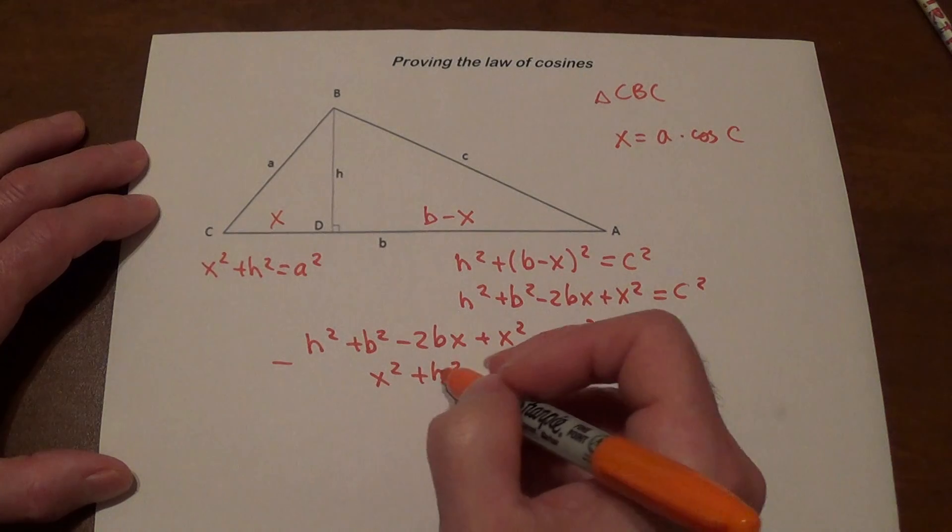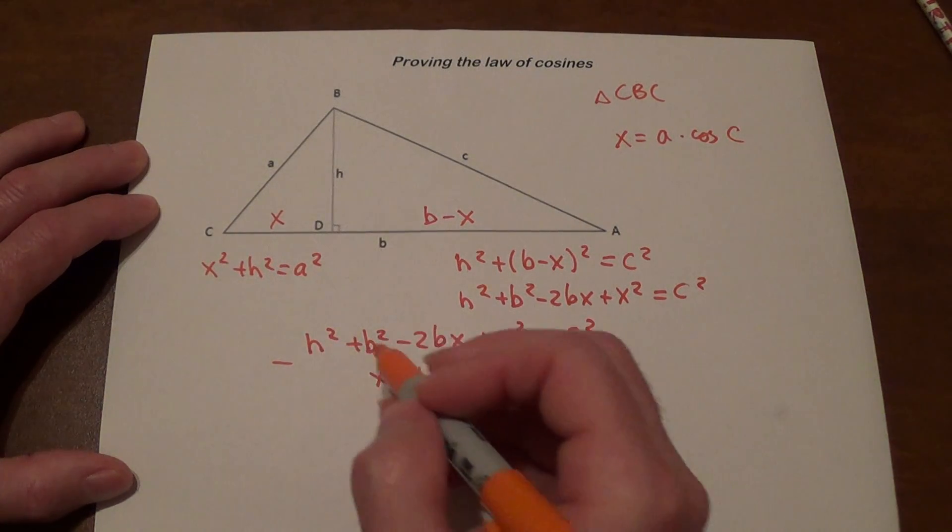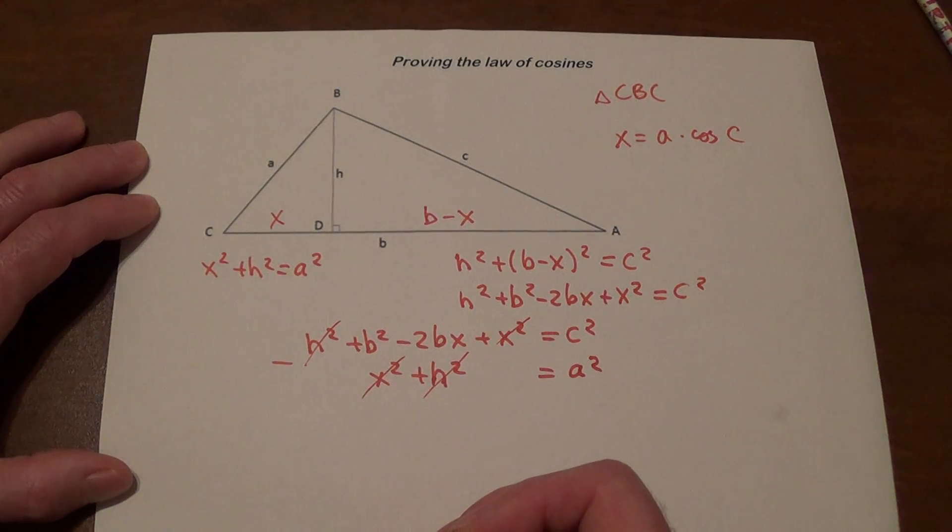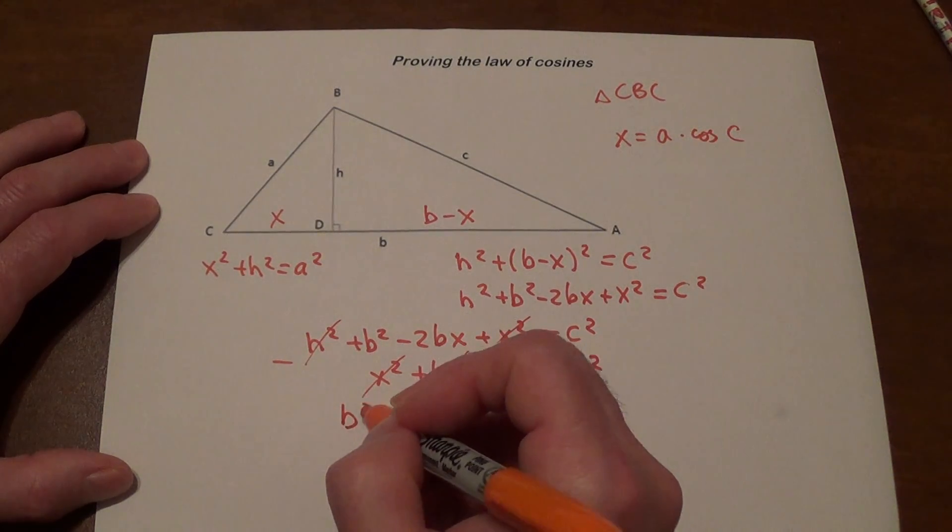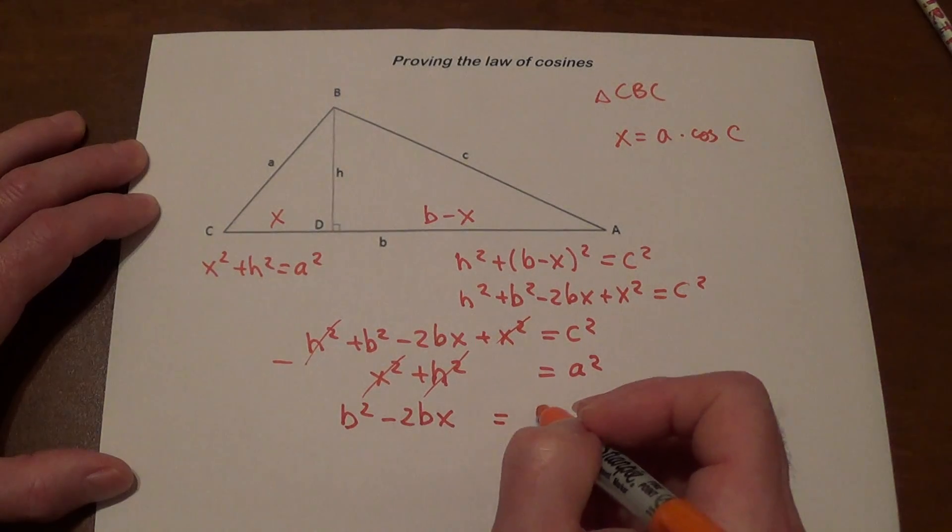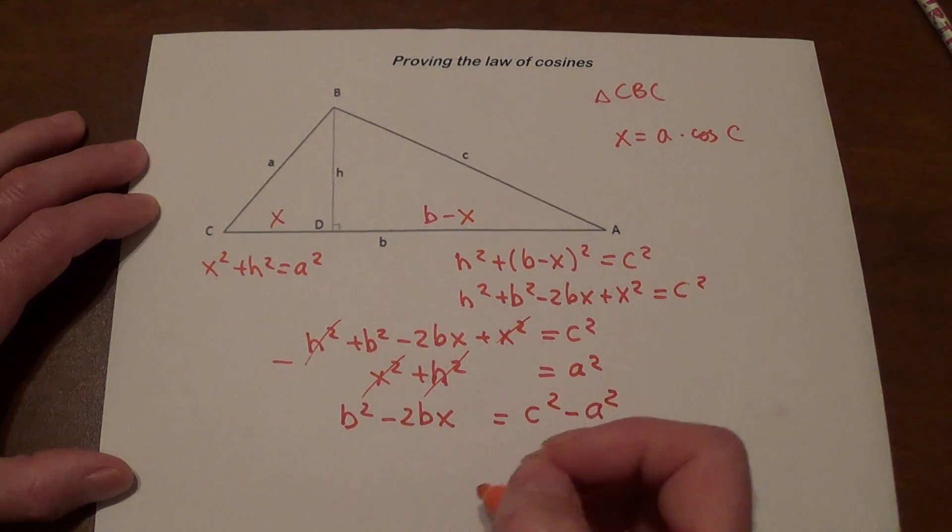Here's what's going to happen. If you look at this, h squared minus h squared is going to cancel and x squared minus x squared is going to cancel. So what are we left with? We're left with b squared minus 2bx on this side, and on the other side we're going to have c squared minus a squared.